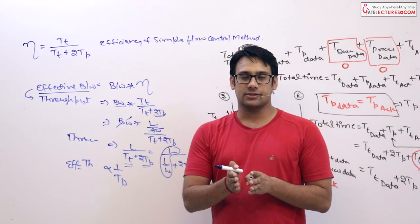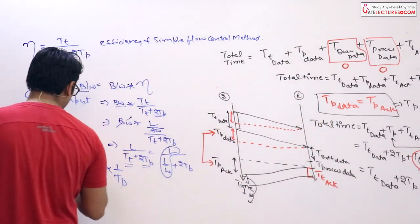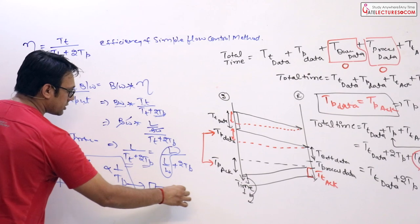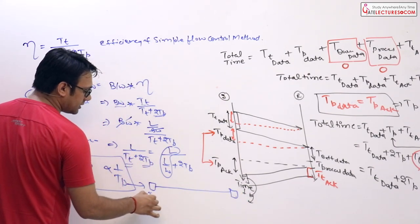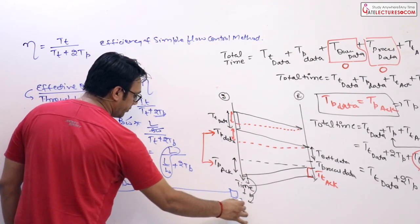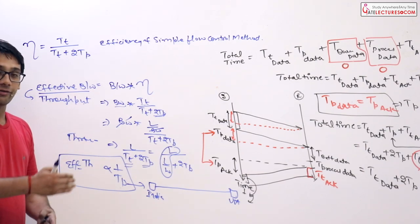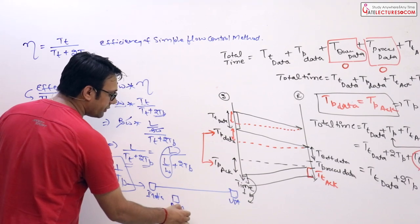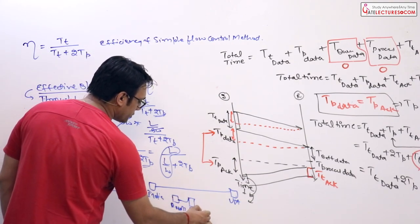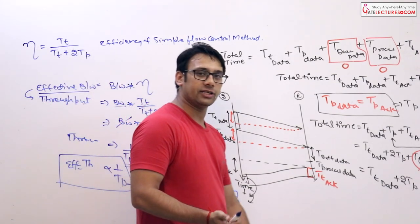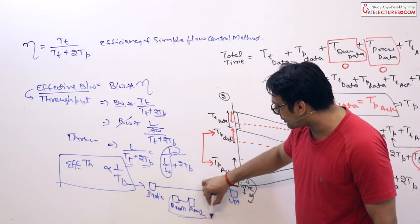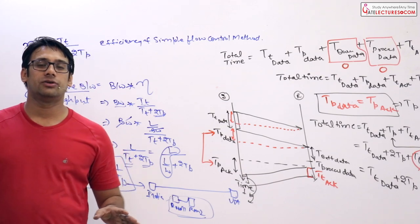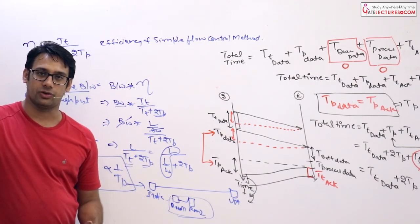If propagation delay is more, throughput is less; if propagation delay is less, throughput is more. For example, if one host is in India and the other is in the USA, they are very far apart and you will get very low efficiency. But if one computer is in Room 1 and another is in Room 2 of the same house, the distance is very small and you get very high throughput. This kind of small-distance network is called a LAN, or local area network. Hence, simple flow control methods are very good for LANs or very small networks.